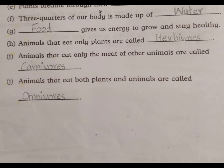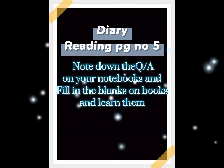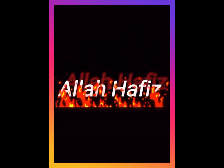Our last blank: animals that eat both plants and animals are called omnivores. Dear students, note down your diaries. Allah Hafiz.